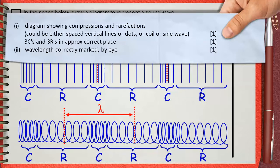Number one: the first mark is for drawing the diagram showing compressions and rarefactions. You can use spaced vertical lines, dots, coil, or sine wave. All these will be accepted.